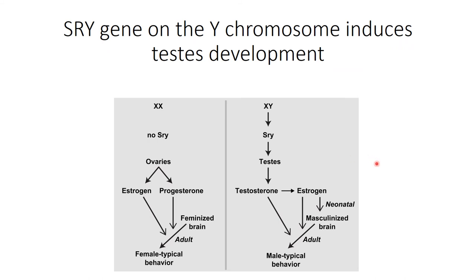This diagram illustrates how SRY works to lead to the production of testes or not, showing the different steps from gametic or chromosomal sex. Typically females are XX and males are XY. The SRY gene is found on the Y chromosome, so females do not have SRY, meaning the bipotential gonads turn into ovaries, producing female hormones — estrogen and progesterone — which act on the brain leading to a feminized brain and female typical behavior. These are activational changes.